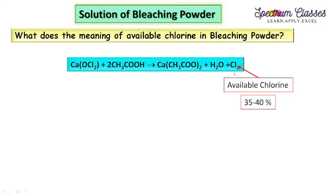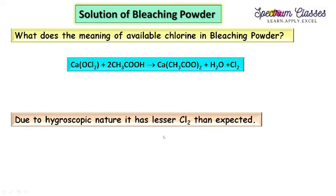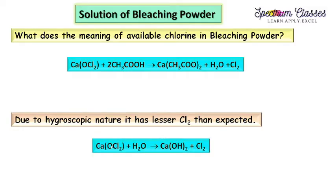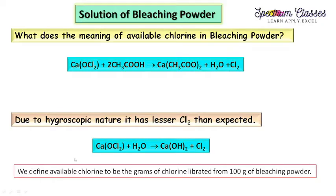The reason it is not 100% available is that bleaching powder is hygroscopic in nature — it reacts with water, producing chlorine gas which is released earlier, and therefore we always get lesser chlorine than the expected concentration. That is why we call this 'available chlorine' rather than just 'chlorine'. We define available chlorine as grams of chlorine liberated from 100 grams of bleaching powder, i.e., reported as a percentage.